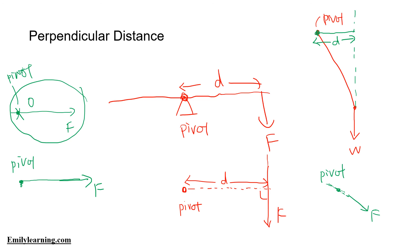Make sure you know how to find perpendicular distance. When dealing with forces at an angle, extend the line of the force and draw a perpendicular line from the pivot to that line — that is the perpendicular distance. With that, we come to the end of our quick summary on what is tested for the chapter on turning effects of forces. If you're interested in other chapters, do check out our other videos. Thank you and see you.